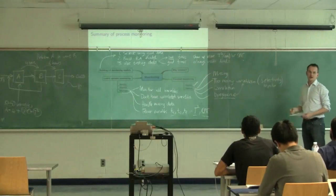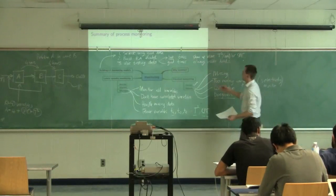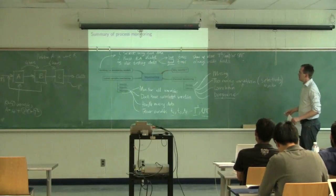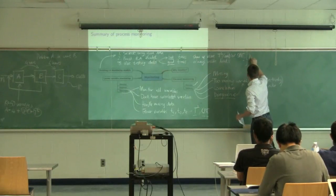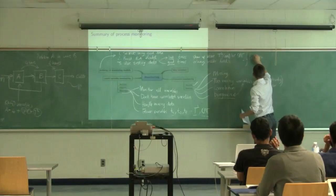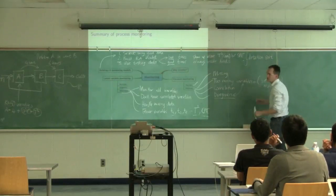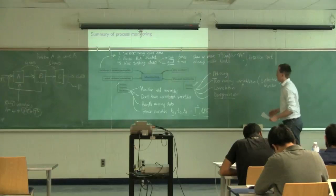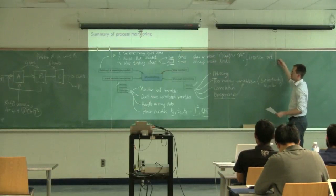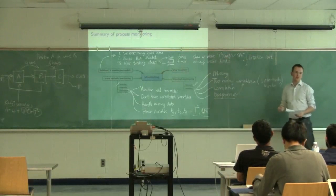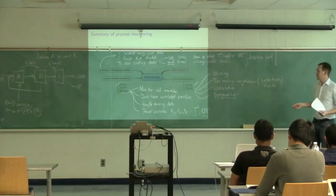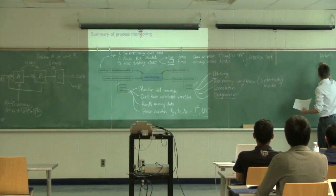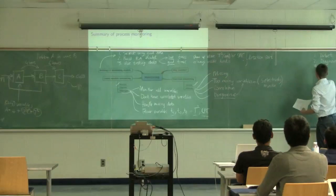Last class we spoke about how the software calculates those limits. The good periods of operation should always fall within those limits. This is just the detection part. You detect a problem when it shows outside the limits on the scores, outside the limits of T², or outside the SPE. But that's not the end of process monitoring. Process monitoring: we want to detect, then we want to diagnose, and then we want to fix the problem.